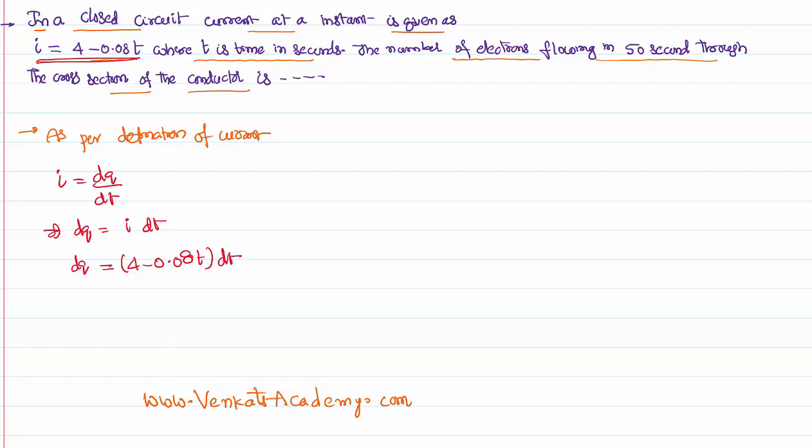This is the small charge passing through the conductor in a small time dt. To get the total charge in given time, we have to actually calculate for each time how much charge it is and we have to add all the charges together.